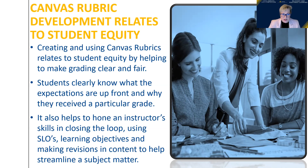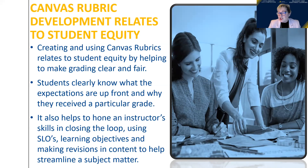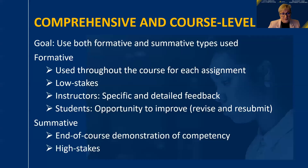Rubrics help us hone an instructor's skill in closing the loop — step six in the SLO implementation. We're utilizing the learning objectives and making revisions. If more than 30% of your class is doing poorly in one particular area, what can you do as an instructor to help students excel in that portion? Where did you drop the ball? What can you do differently? Maybe you need to redesign that portion of the rubric to be more explicit so students can achieve a higher level of mastery.